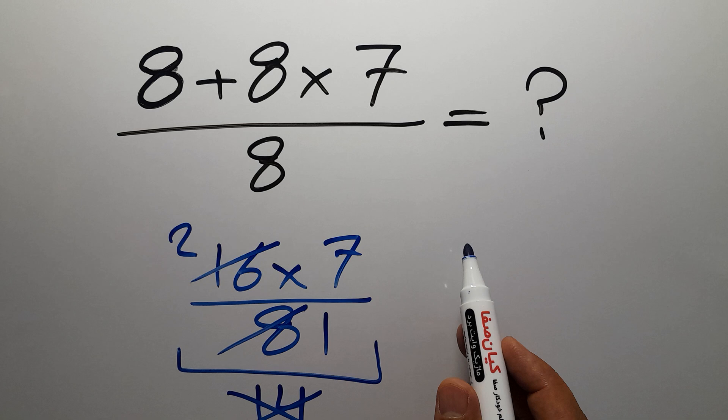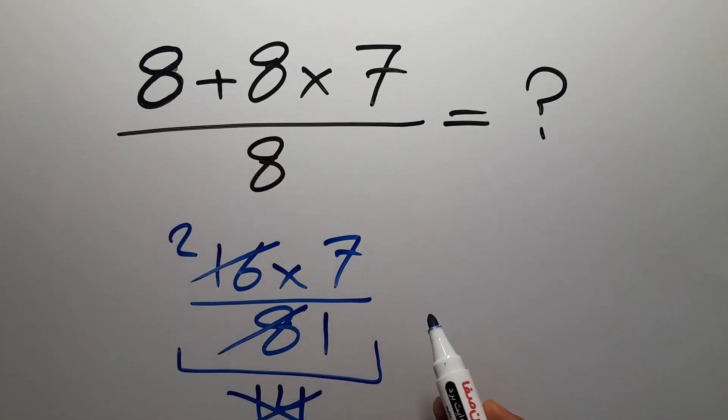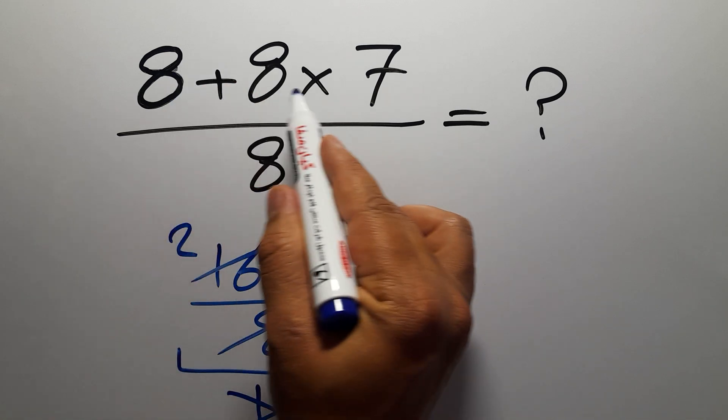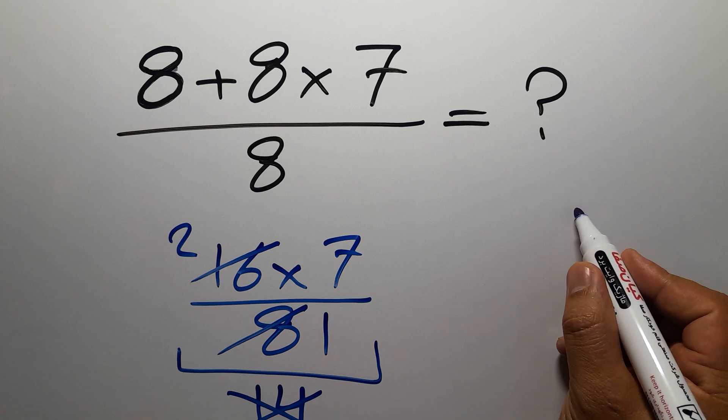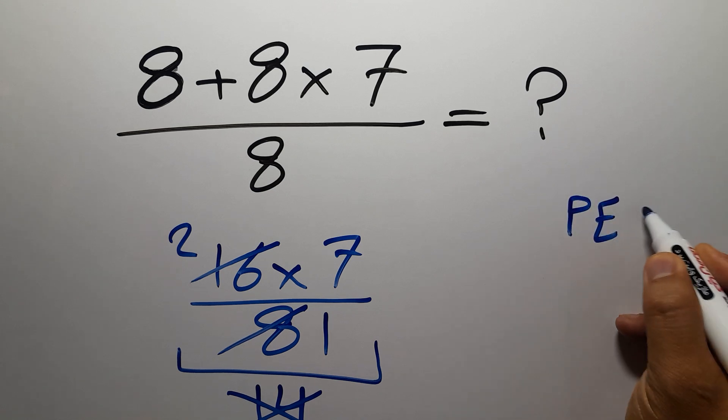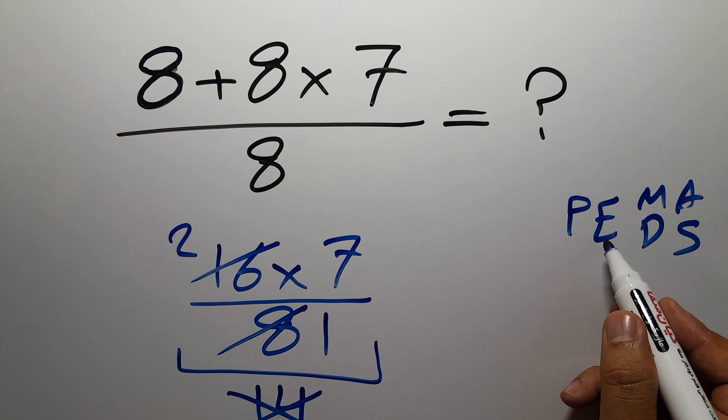the numerator, first we have to do this multiplication, then this addition. Not addition then multiplication. According to the order of operations, which is PEMDAS: parentheses, exponents, multiplication, division, addition, and subtraction. First we have to do parentheses, then